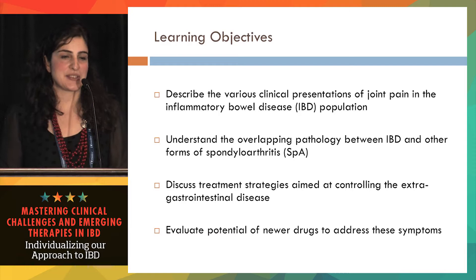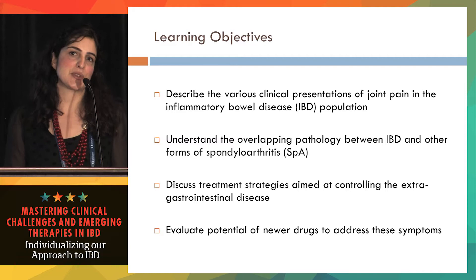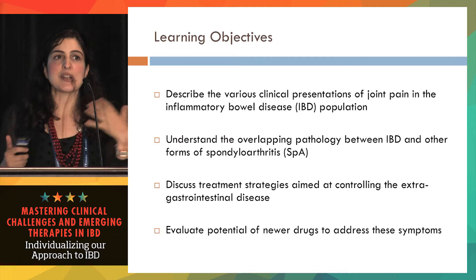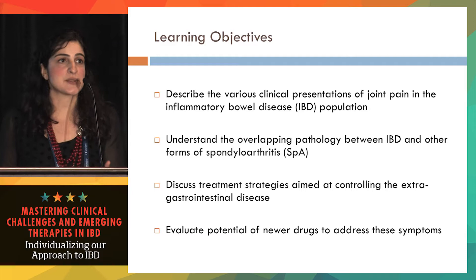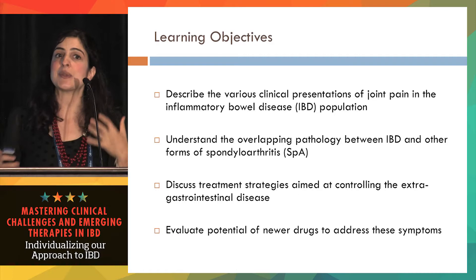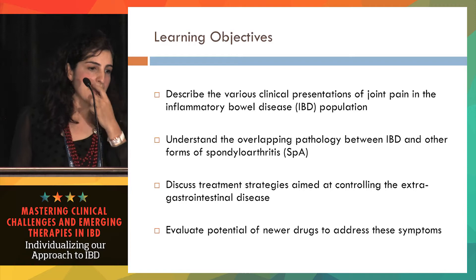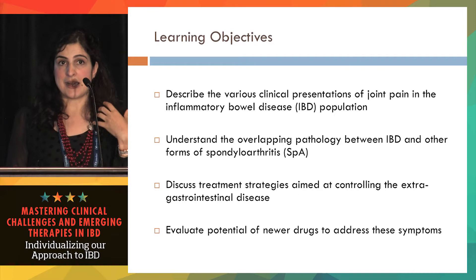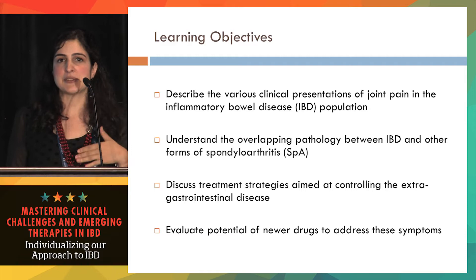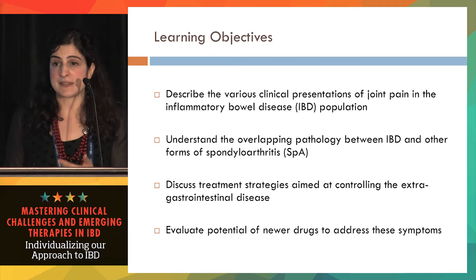In this short session, we want to review the kinds of presentations of joint pain we might expect in patients with Crohn's and ulcerative colitis, and what is the overlap between inflammatory bowel disease and other kinds of spondyloarthritis — diseases like psoriasis, psoriatic arthritis, reactive arthritis, and ankylosing spondylitis. We'll discuss what links these diseases together as rheumatologists, and focus more on management: treatment strategies, how we approach these patients, and the relevance of newer agents coming on the market for IBD to these more systemic manifestations of disease.